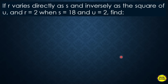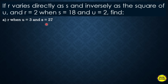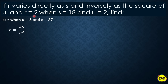Another example: If R varies directly as S and inversely as the square of U, and R = 2 when S = 18 and U = 2, find R when U = 3 and S = 27. Translate into equation: R = KS/U². To find the constant, substitute the given values: 2 = 18K/2², and 2² = 4.